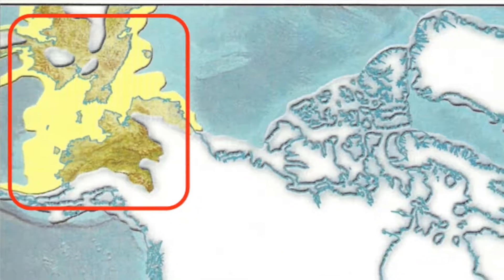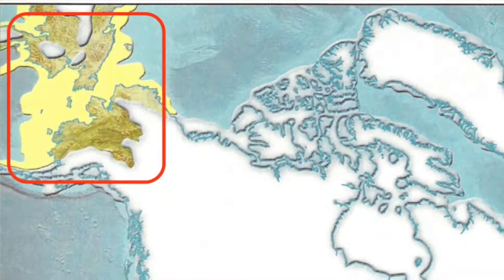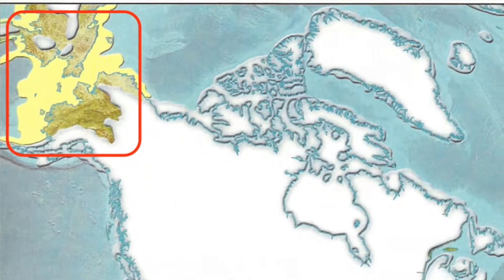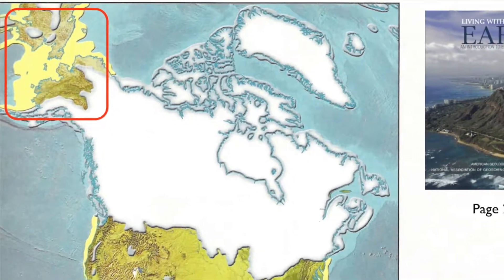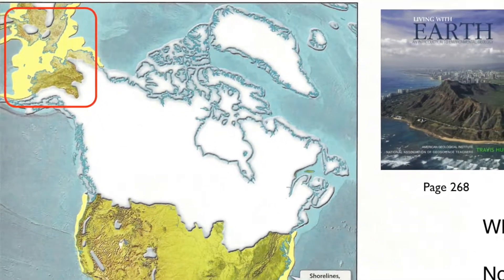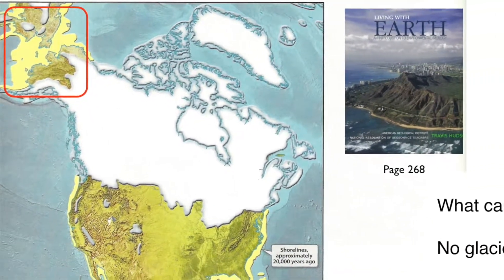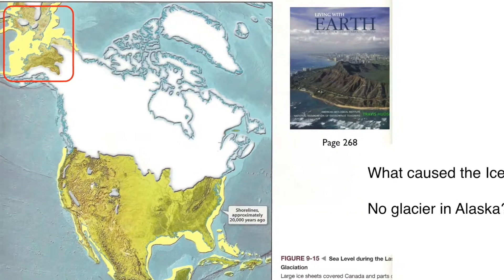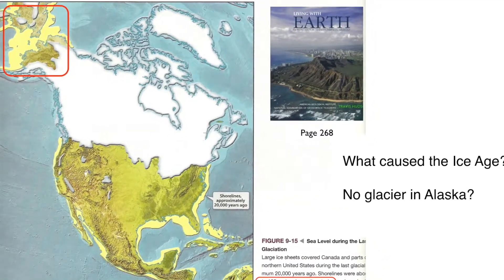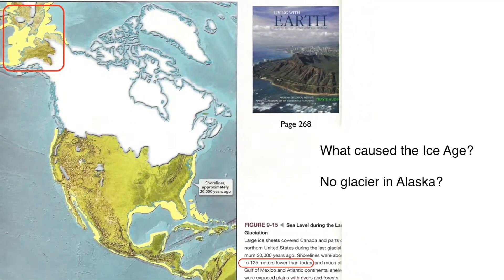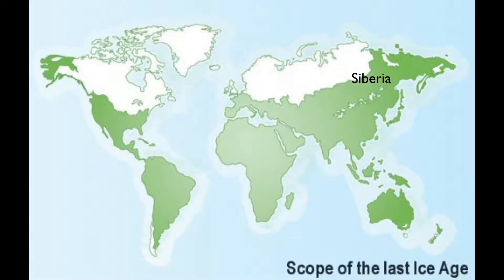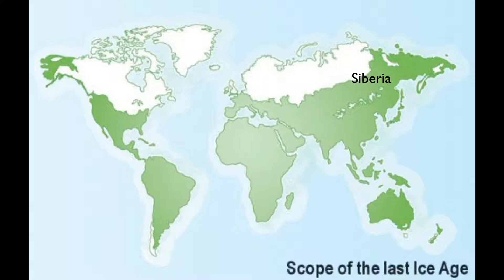Notice up here in Alaska — this is the last ice age. Why doesn't parts of Alaska have a glacier? We got glaciers down to here. Ice is solid but not in Alaska. Why is that? Even in Siberia they got permafrost today, but during the ice age they didn't have a glacier. Why is that?